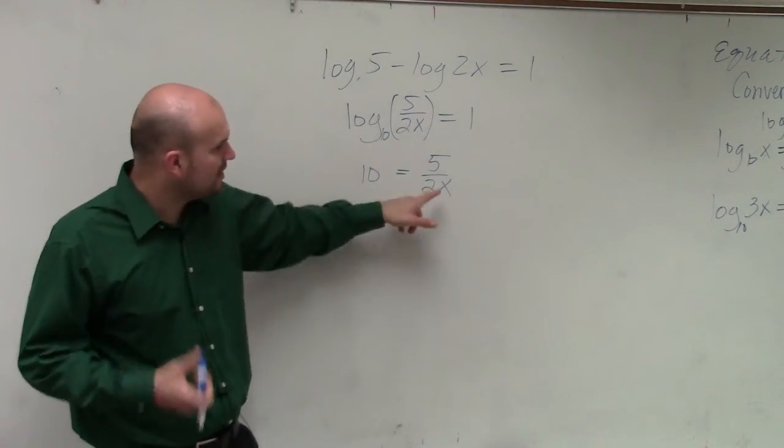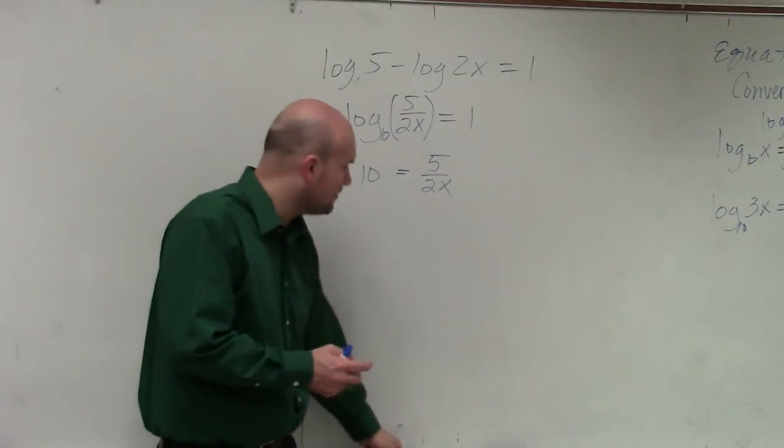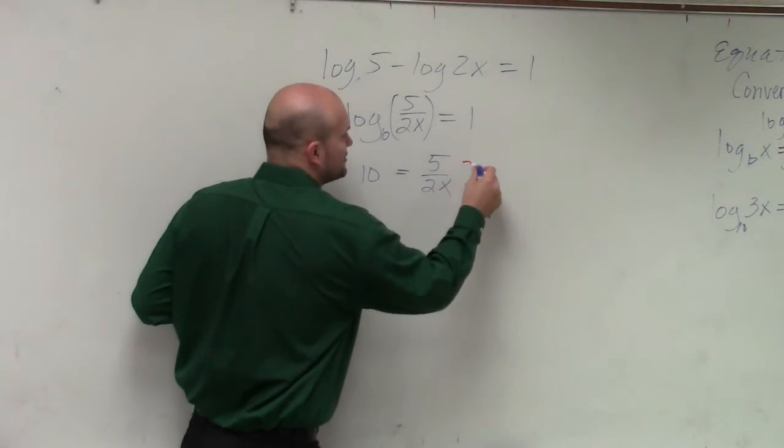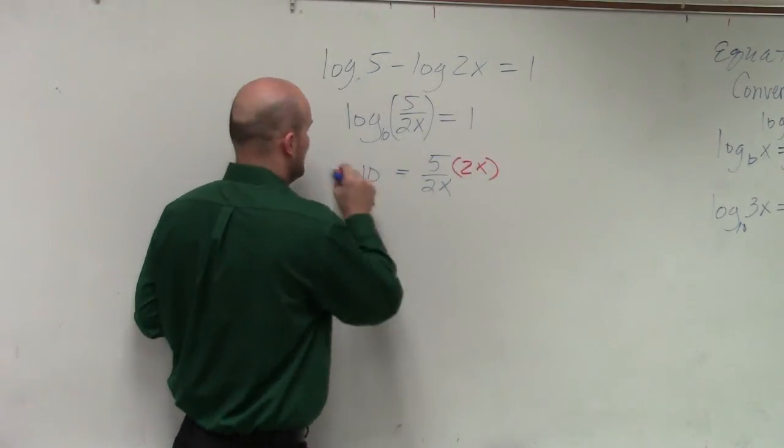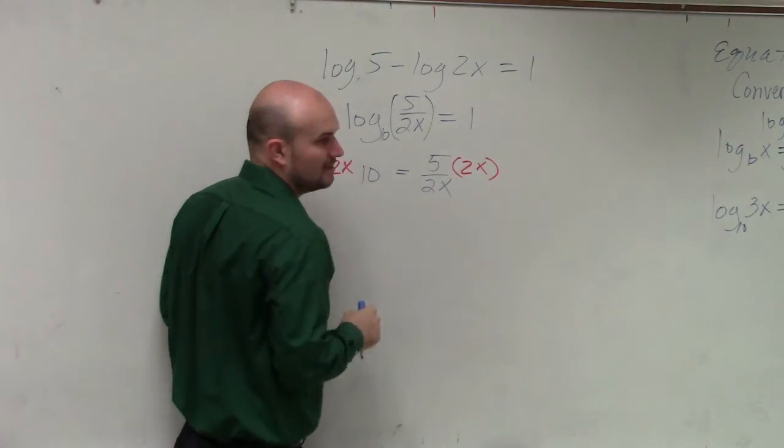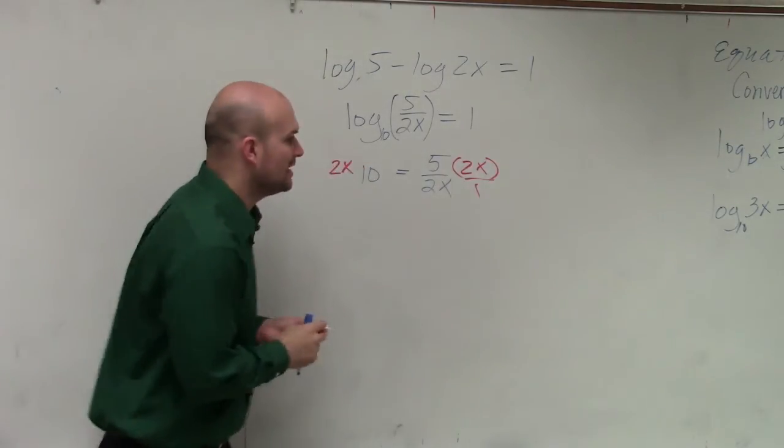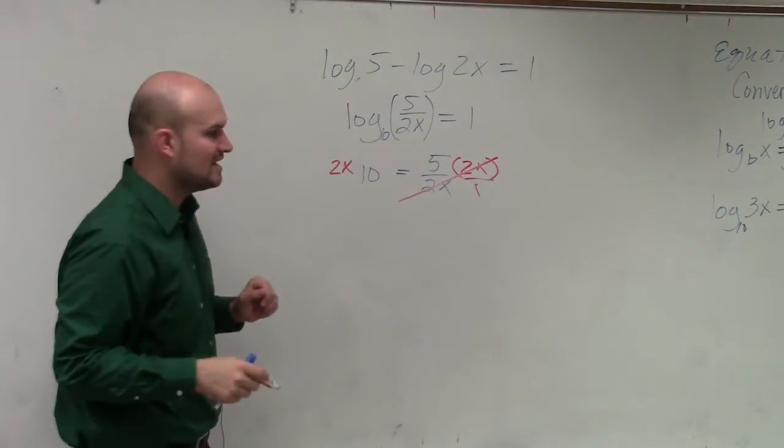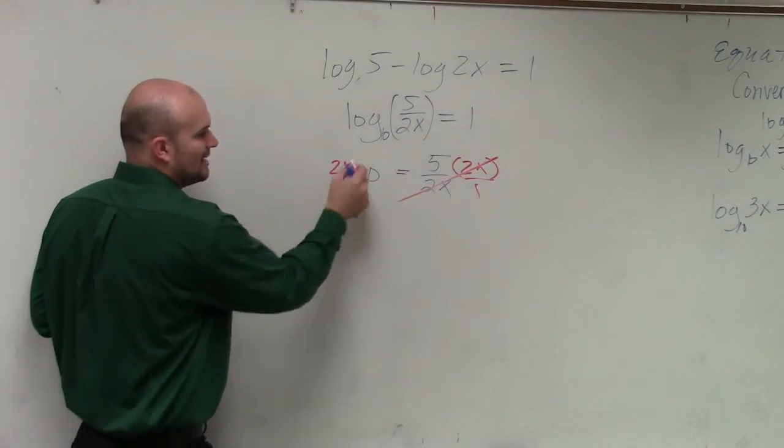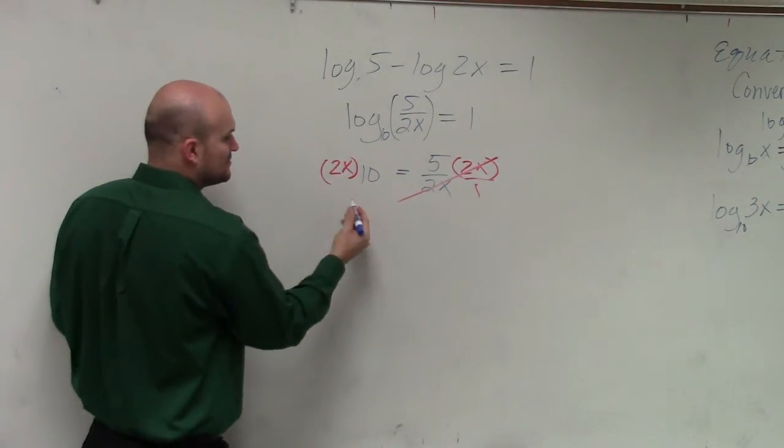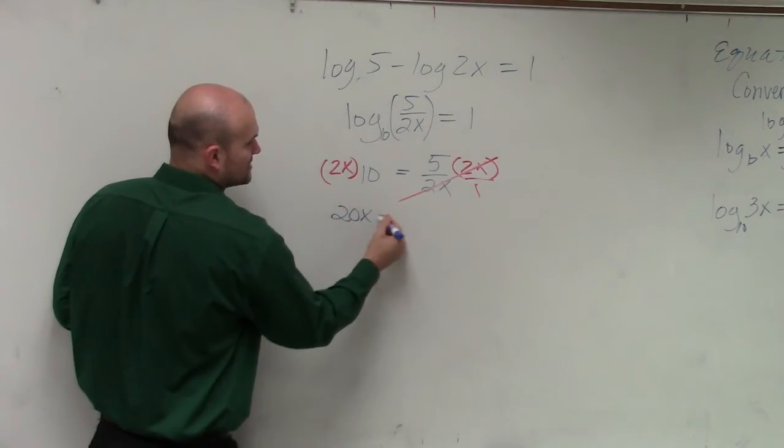Well, you just want to multiply by a reciprocal of 2x. Basically, all we need to do is multiply by 2x on the right side and on the left side. Because if you multiply that in the numerator, that now divides the 1, and now you're just left with 2x times 10x, which is 20x equals 5.